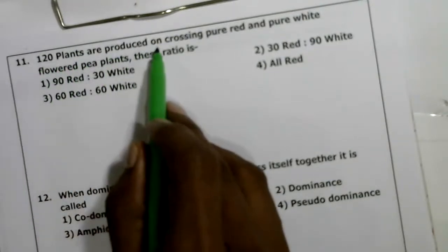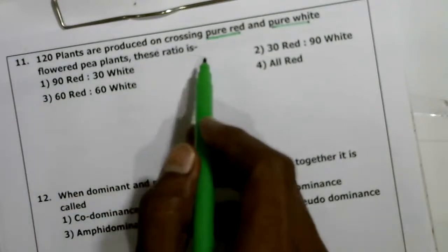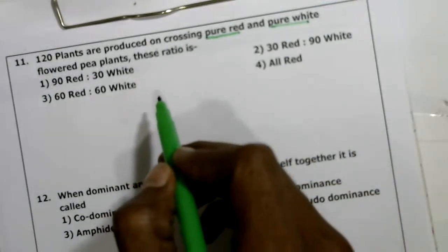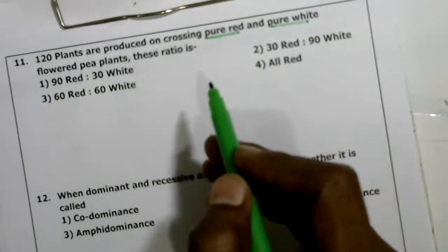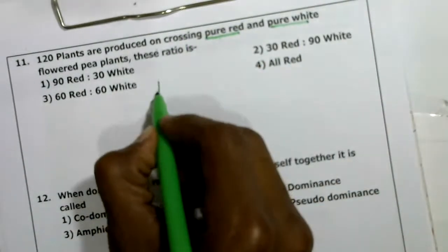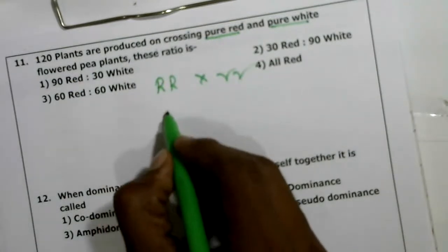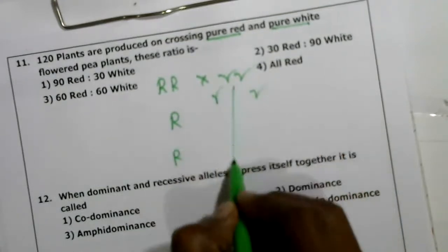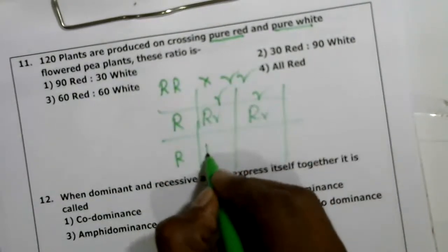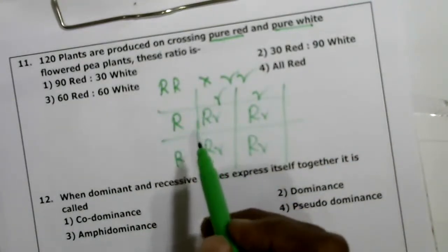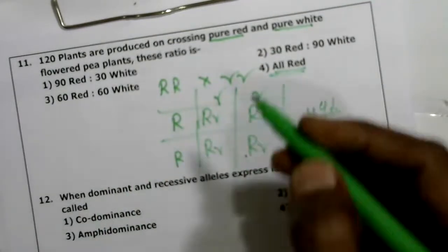Eleventh question: 120 plants are produced on crossing pure red and pure white flowered pea plants — what is the ratio? Based on monohybrid cross, when you cross homozygous pure red (capital R capital R) with white (small r small r), in F1 generation all offspring are heterozygous red. All four offspring from this cross show red color. The fourth option is correct.